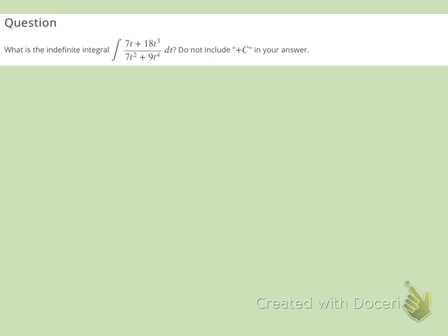So I'm going to let that denominator be the u. I'm going to start off by rewriting this as the integral of 1 over 7t squared plus 9t to the 4th times 7t plus 18t cubed dt.